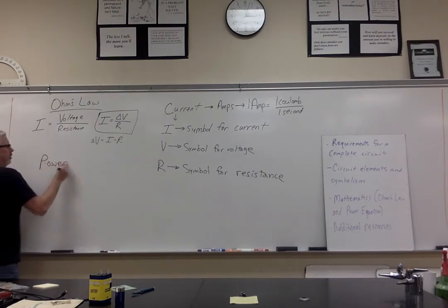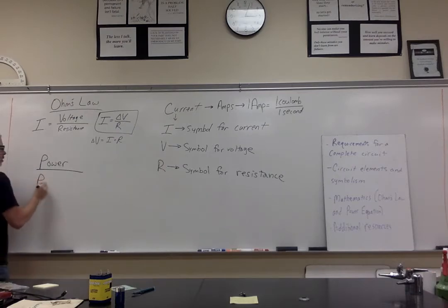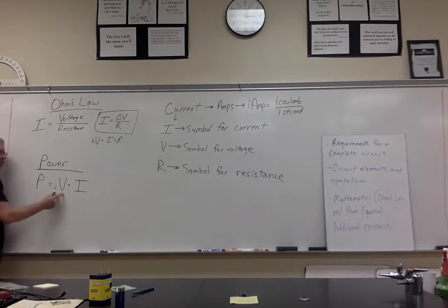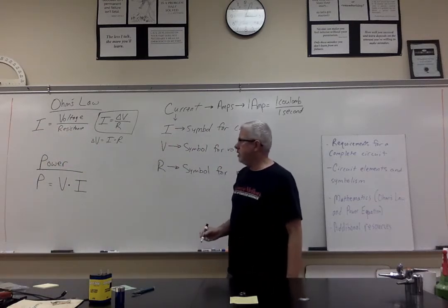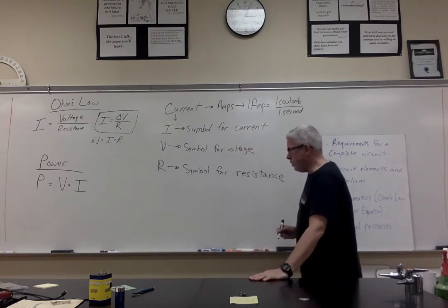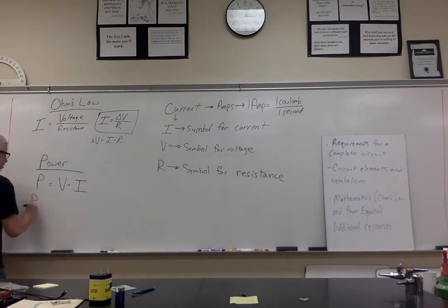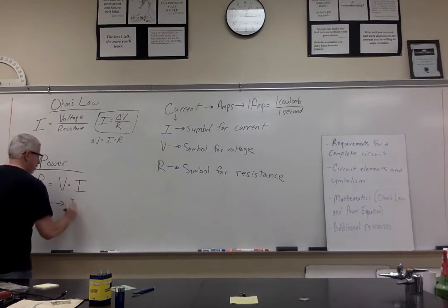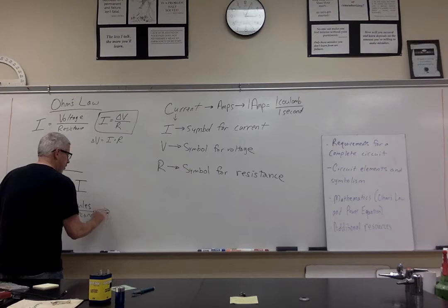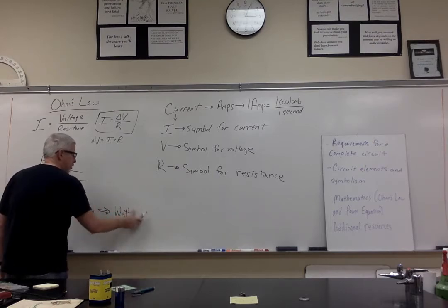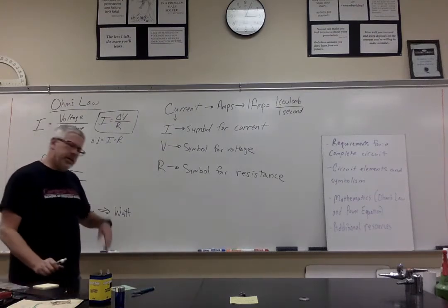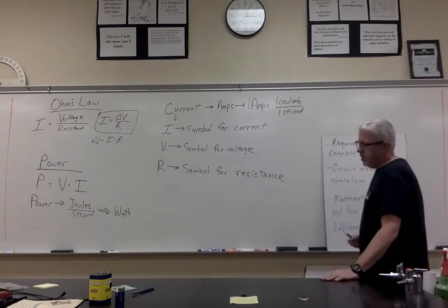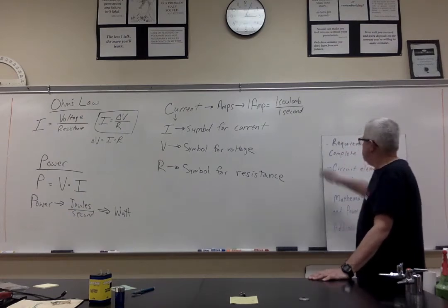The power formula is: power is equal to voltage times current. If a volt is a unit of energy per charge — a joule per coulomb — and current is a rate of flow, a coulomb per second, then multiplying those gives joules per second. One joule per second is actually one watt. This is probably familiar in terms of electricity — you might see a 60 watt or 100 watt equivalent light bulb.